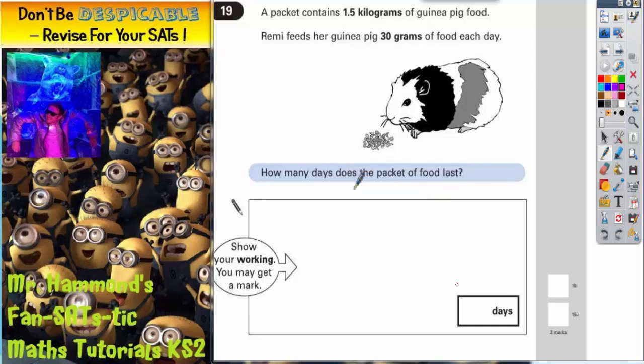We've got a big answer space here to do some working out. Now the first thing you should be noticing is that this number here is in kilograms and this number here is in grams. It's going to be difficult to do anything with that unless they're both in the same unit.